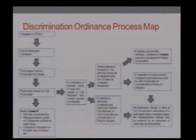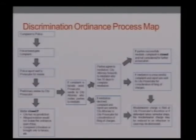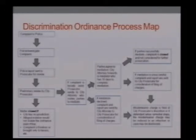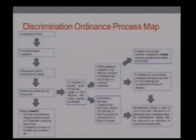That's, in a nutshell, both the structure of the ordinance and how it would function. There are a couple of other pieces to keep in mind. I would recommend that if the city council moves forward with a non-discrimination ordinance like this, they pass a resolution outlining this process — a guideline for both the prosecutor and the city attorney to follow, and for the public to know what to expect when a complaint goes in.